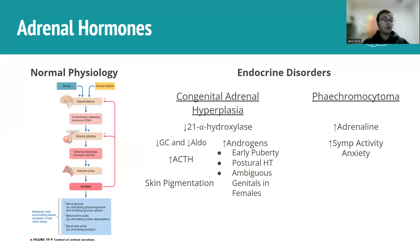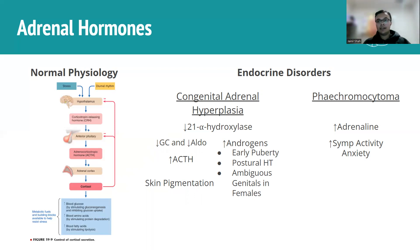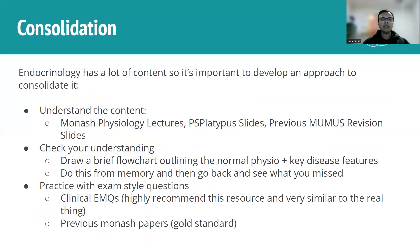Pheochromocytoma is essentially an overproduction of adrenaline. The main thing to know is you get a significant increase in sympathetic activity — all sympathetic functions are upregulated. As a result of the body being in a constant fight-or-flight mode, patients also experience significant anxiety, which is the psychological component of this condition.